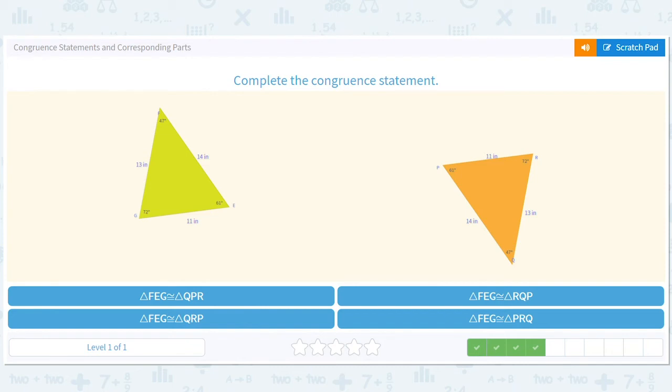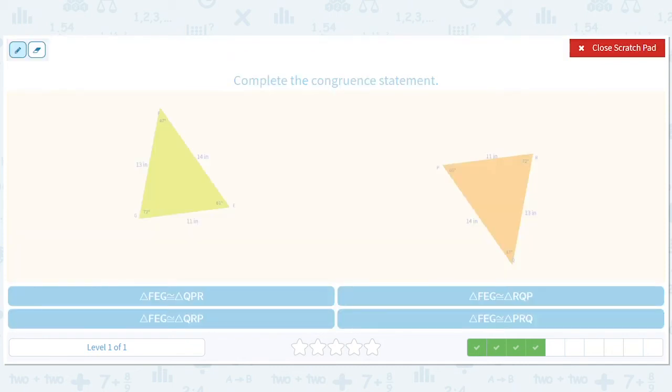Which of these triangles are the same? So we have F, E, G and Q, P, R. So this matches this. So the F is first and the Q has to be first. So all of these have the F first on the left. So the Q has to be first. So that knocks out this one and this one. What's next? The E is next. So the E has to match this, has to match this. So the E has to match the P. So that's going to give you this one here. F, E, G equals Q, P, R.